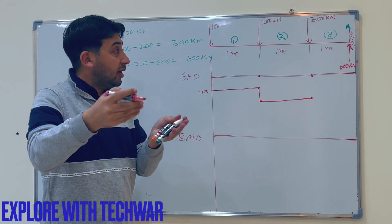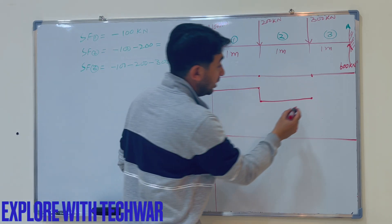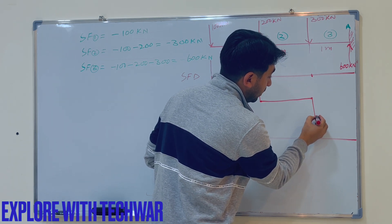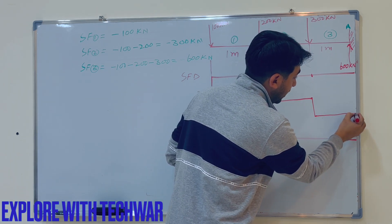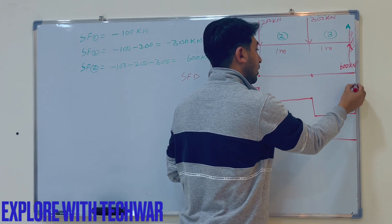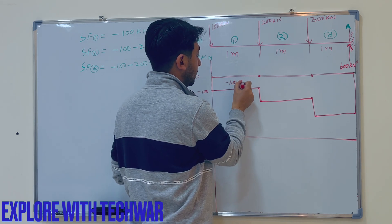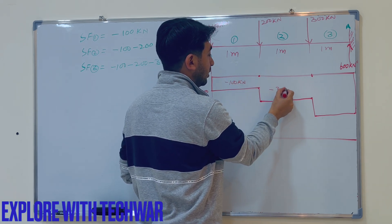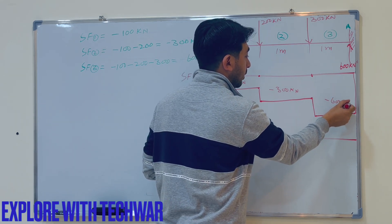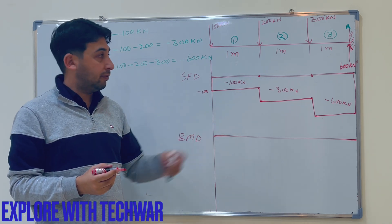Then at section 3, the shear force becomes minus 600 kilonewtons, acting until the end of the beam. At the support, the reaction of 600 kilonewtons brings the diagram back to zero. So we have minus 100, minus 300, and minus 600 kilonewtons — this is how we draw the shear force diagram of the cantilever beam.